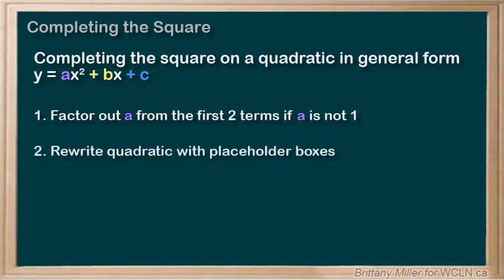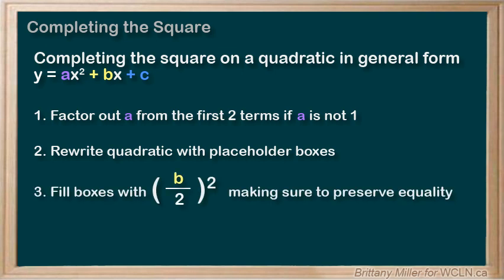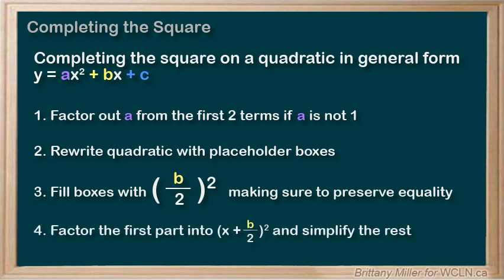Then we rewrite our equation with the placeholder boxes. We fill those boxes with b over 2 squared, and then we factor the first part of the quadratic into x plus b over 2 squared, and simplify the rest.